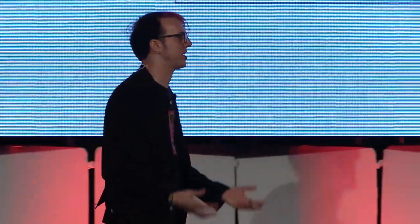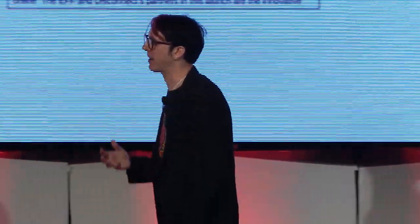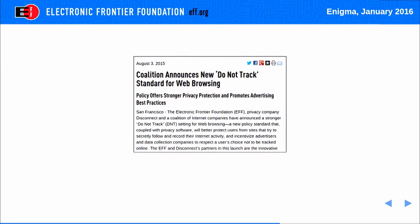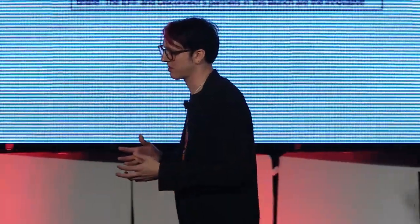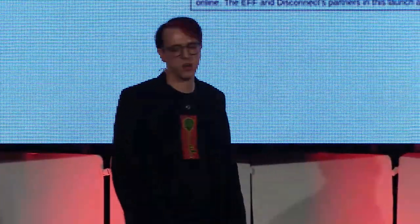At EFF, we started to change the dynamic by providing an incentive for tracking and ad companies to actually respect user privacy. On August 3rd of last year, we launched the Do Not Track policy, along with a coalition of organizations including Disconnect, Medium, Adblock, and ad tech company Adzerk. Participating companies post this policy to a well-known location on their web route, promising not to track users. But why would they do this out of the goodness of their hearts — what's the real incentive?